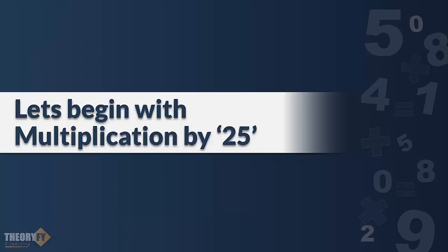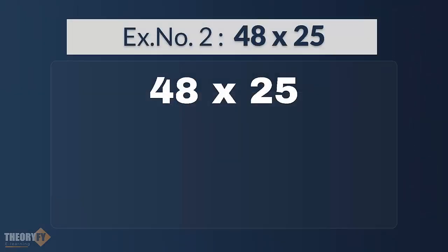Now, let's begin with multiplication by 25. Example number 2, 48 into 25. Now, 25 is 100 divided by 4. So, what we are going to do, instead of multiplying any number with 25, first divide the multiplicand by 4 and then put two 0s after it. You will get your answer.